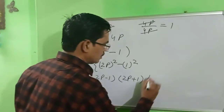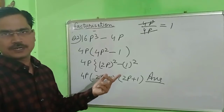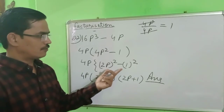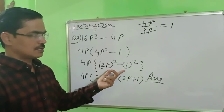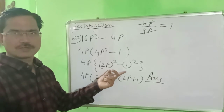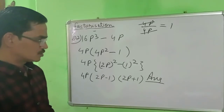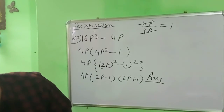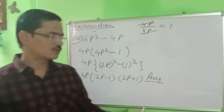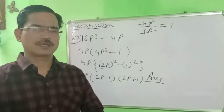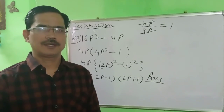But first of all you must keep it in mind that this formula is very important. The formula is a² minus b² equals (a minus b)(a plus b). So this answer is correct. In this way you can solve questions very easily. Thank you, have a nice day. Please like, subscribe and share my channel.